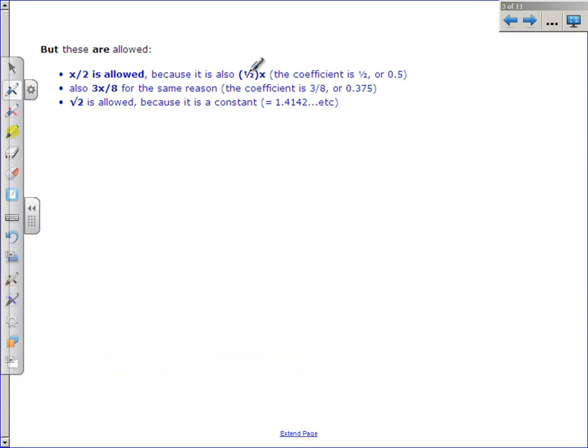You can do x divided by 2. That's the same thing as 1/2 x. That's a common misconception. You can divide by numbers. That's okay. Again, like 3x over 8 would be the same thing as 3/8 x. The coefficients can be fractions.